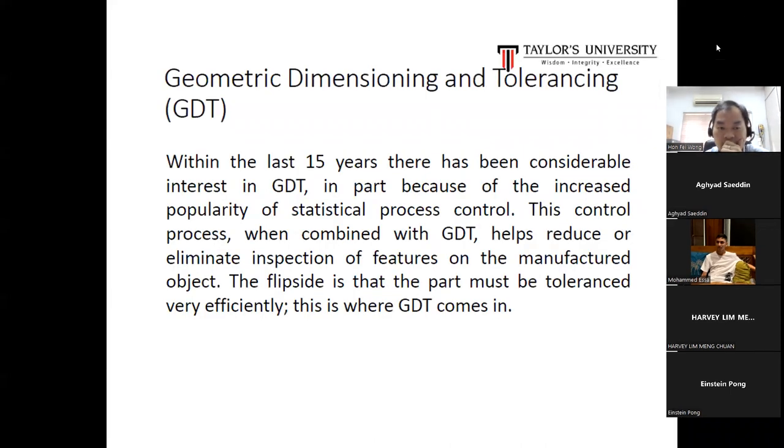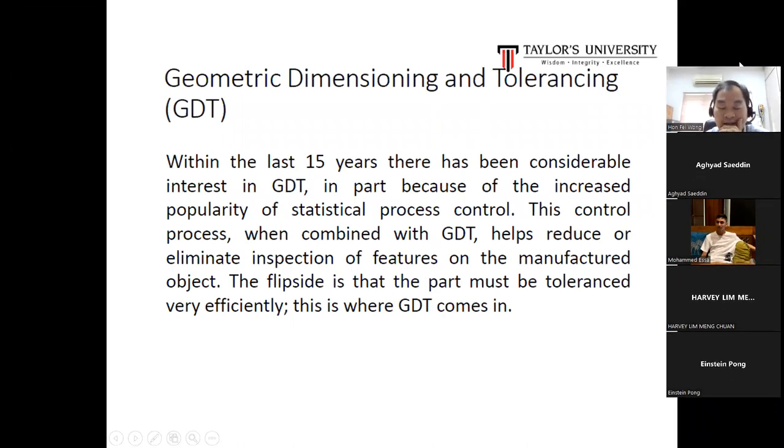So this is Lecture number 10. What is Geometric Dimensioning and Tolerancing, GD&T? I think in tutorial number 5 you have done this, the datum, the flatness, the parallelogram symbols. Within the last 15 years there has been considerable interest in GD&T, in part because of the increased probability of statistical process control. This control process, when combined with GD&T, helps reduce or eliminate inspections of features on the manufactured object. The flip side is that the part must be toleranced very efficiently. This is where GD&T comes in.